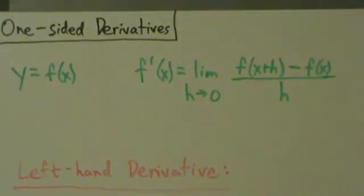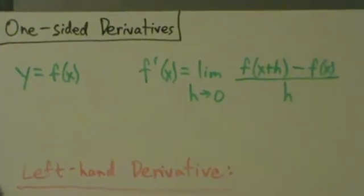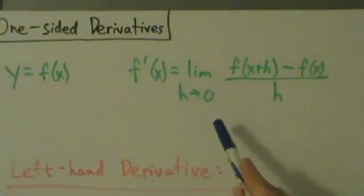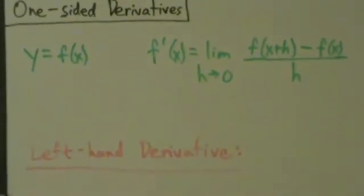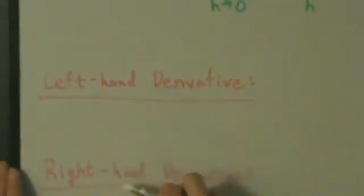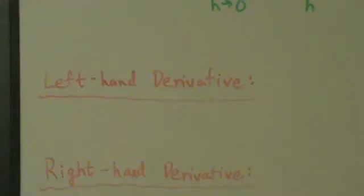Just like we have one-sided limits, we can have one-sided derivatives because the derivative is a limit. It's just a special kind of limit. If we remember the definition for left and right-hand limits, then the definitions for left and right-hand derivatives follow pretty directly from that.